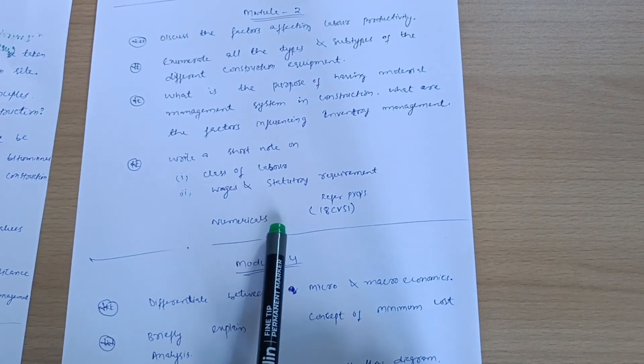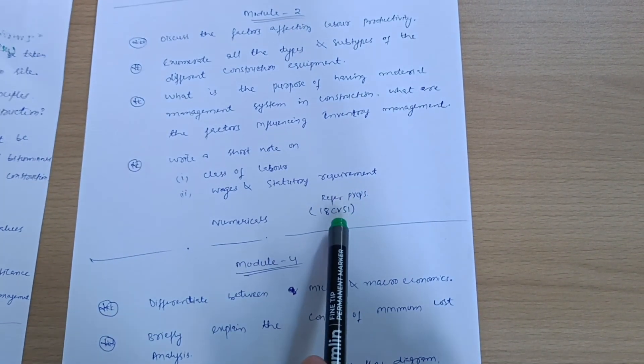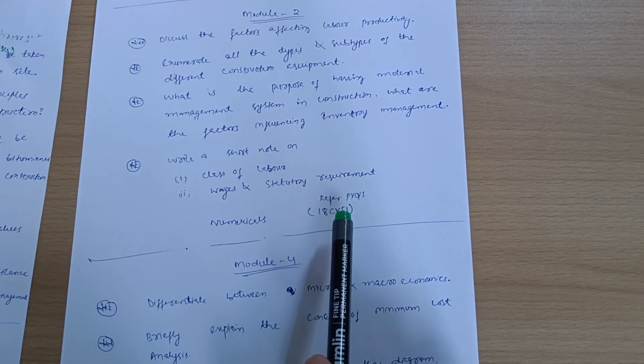Write a short note on class of labor, wages, and statutory requirement. These are the theoretical questions from Module 2. As far as the numericals are concerned, as I earlier mentioned, you have to refer 18 CV 51 paper in order to tackle the varieties of numericals.